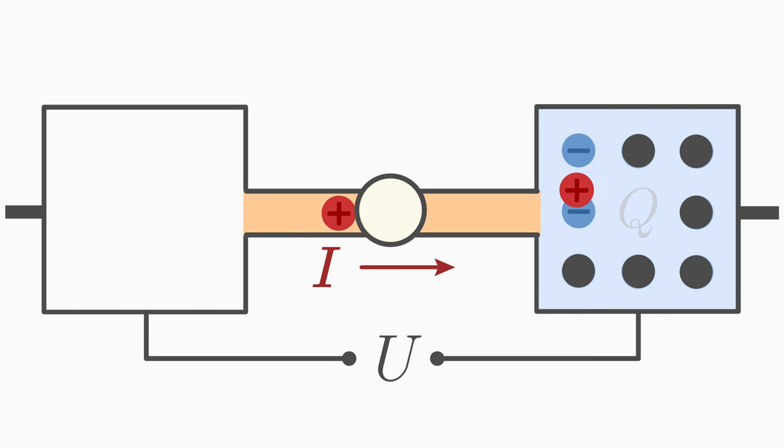As fewer charges are separated, the voltage naturally decreases as well until there are no more charges in the positive box. Then the voltage is zero, the current stops flowing, the light stops shining. The charges are no longer separated from each other, but are all in one box. The opposite charges have neutralized each other. The total charge in the box is now zero.